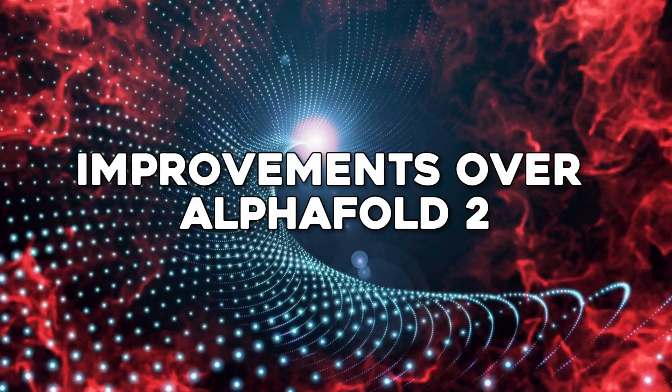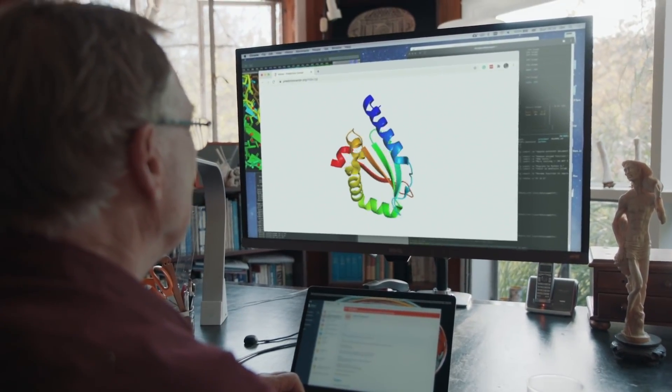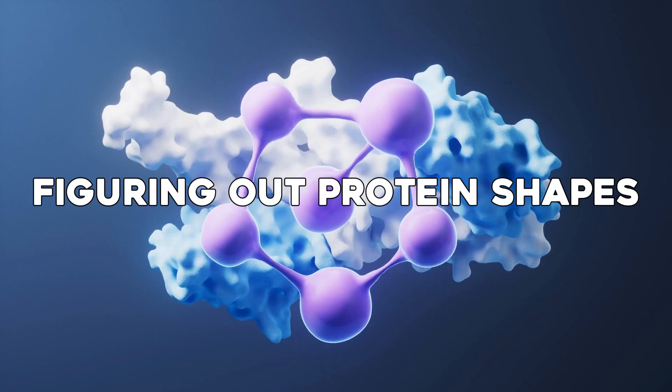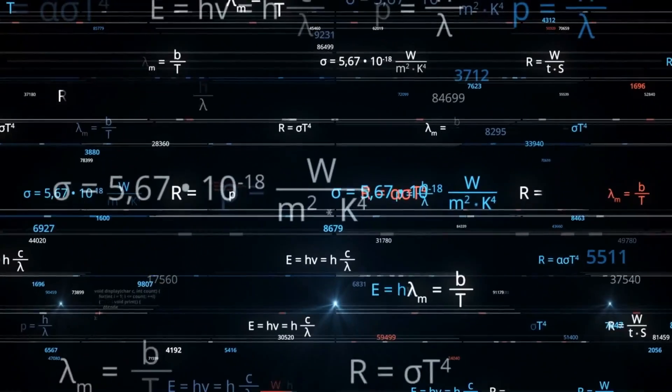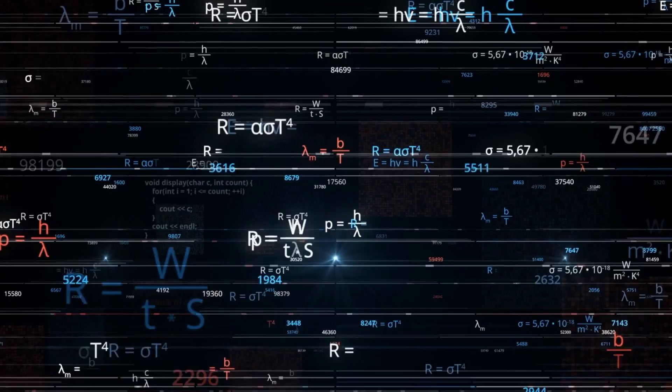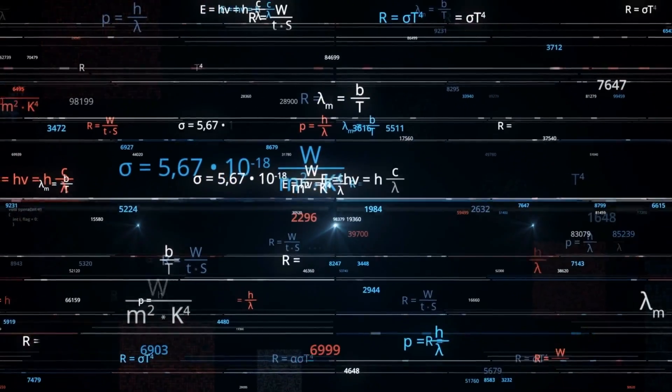While AlphaFold2 was already a game changer in figuring out protein shapes, AlphaFold3 has taken this a huge step further. It's not just better, it's smarter in how it deals with even more complex puzzles.